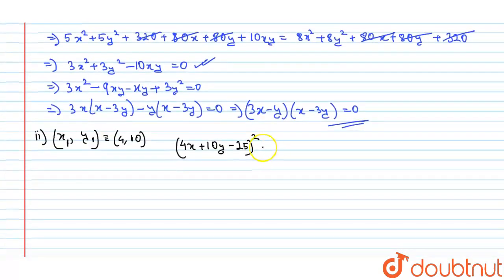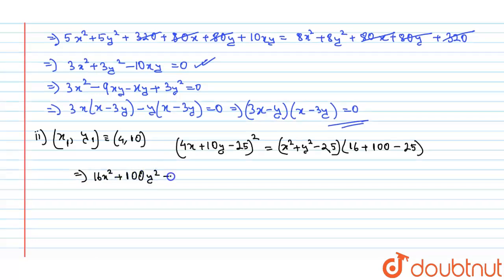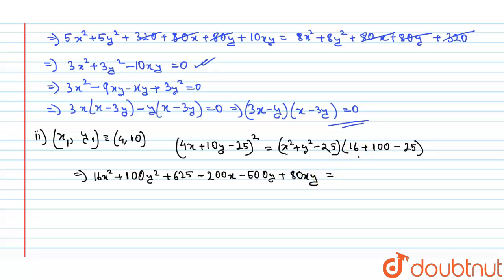SS₁: S = x² + y² - 25, and S₁ = 16 + 100 - 25 = 91. Expanding T²: 16x² + 100y² + 625 - 200x - 500y + 80xy equals 91(x² + y² - 25).